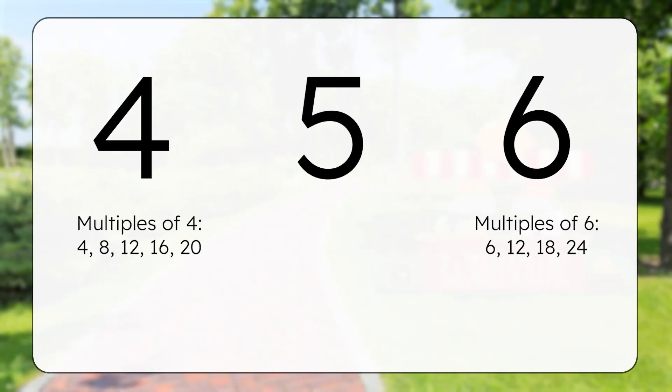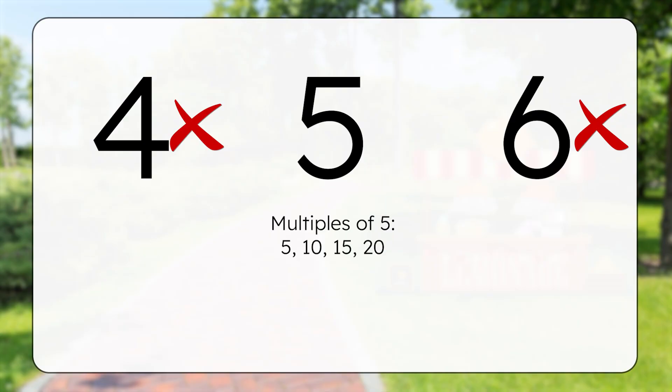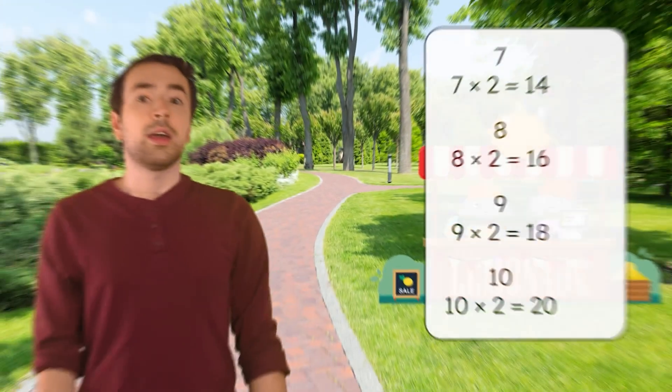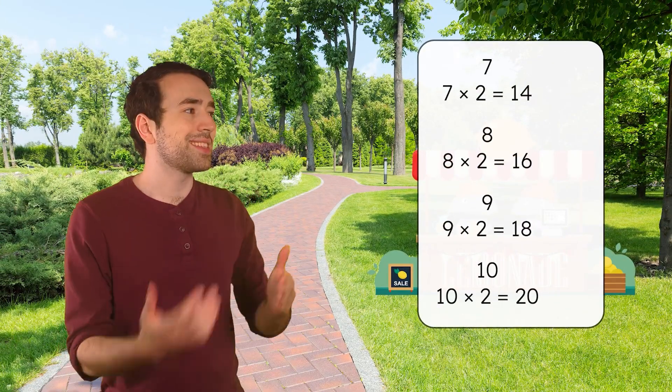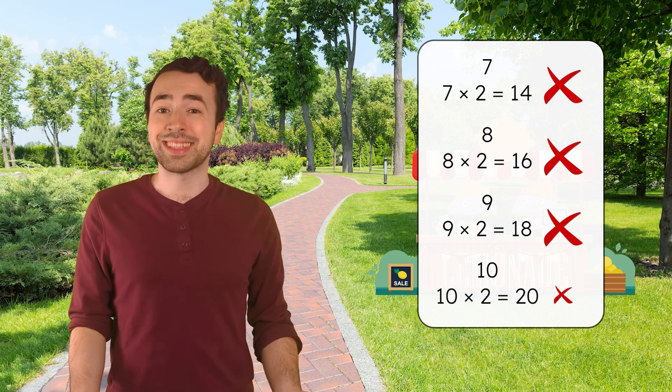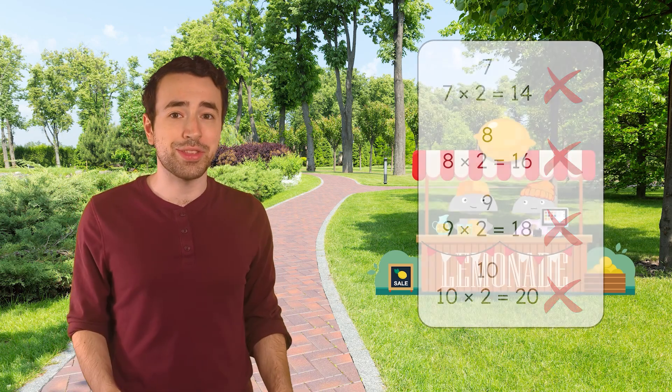What do you notice about these multiples of 4 and 6? They're all even, so 4 and 6 can't be factors of 17. And what does a number need to end in to have 5 as a factor? 0 or 5, right? So 5 isn't a factor either. And based on our multiplication facts, 7, 8, 9, and 10 aren't factors either.